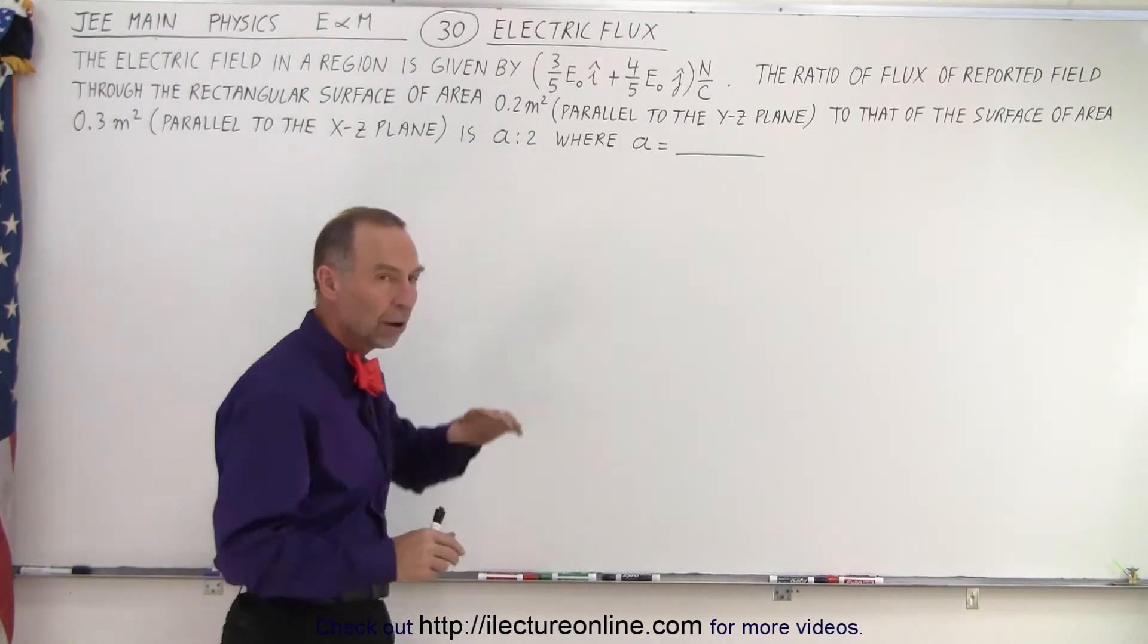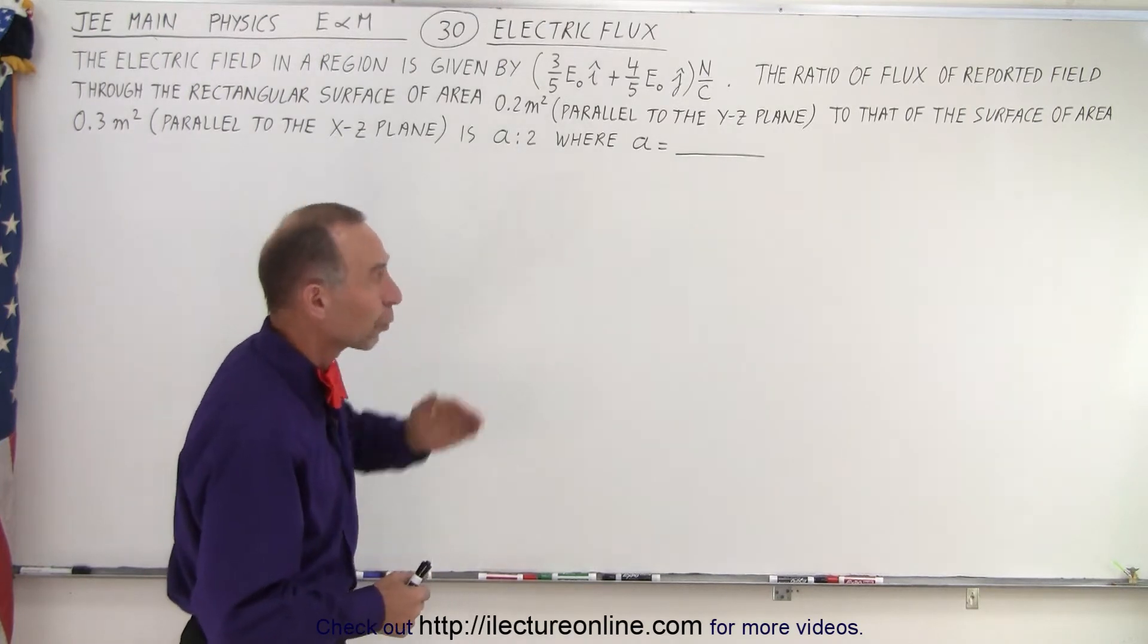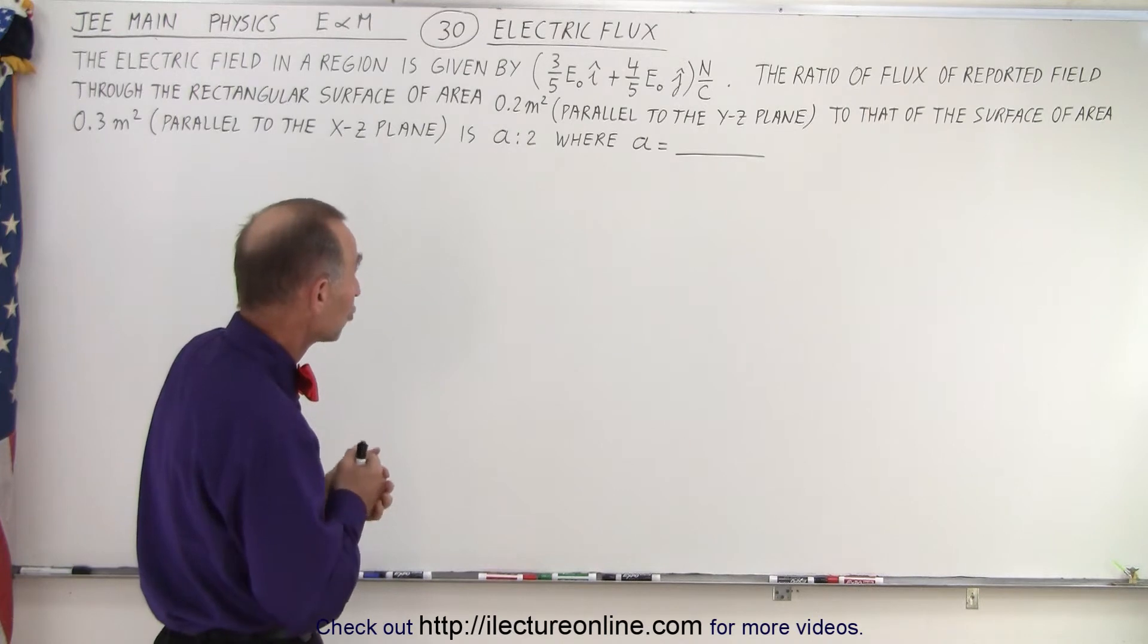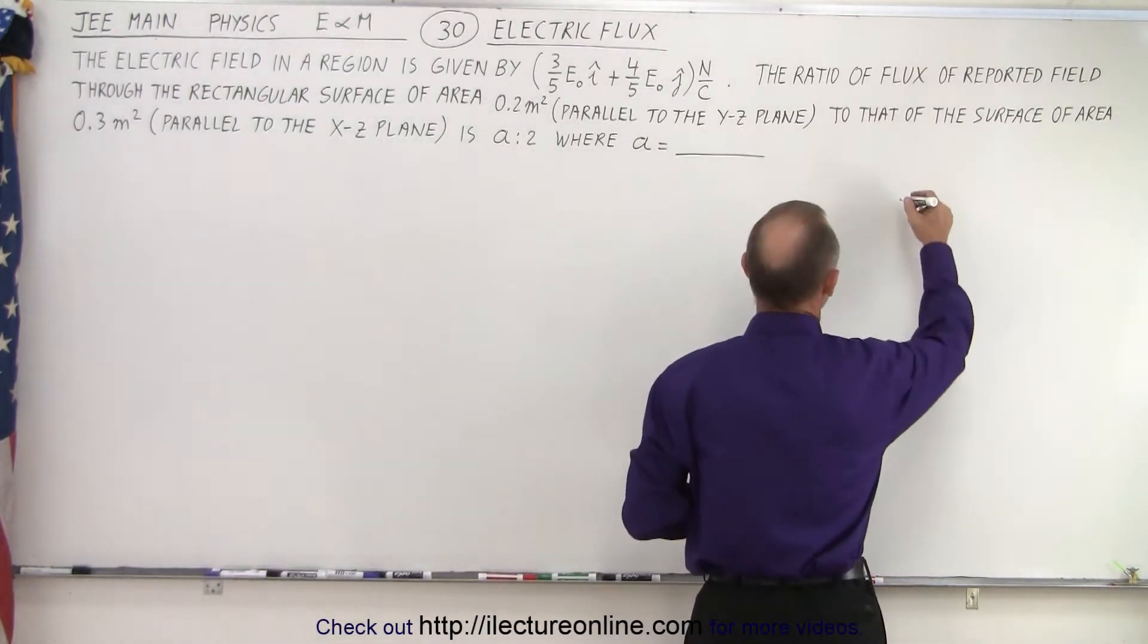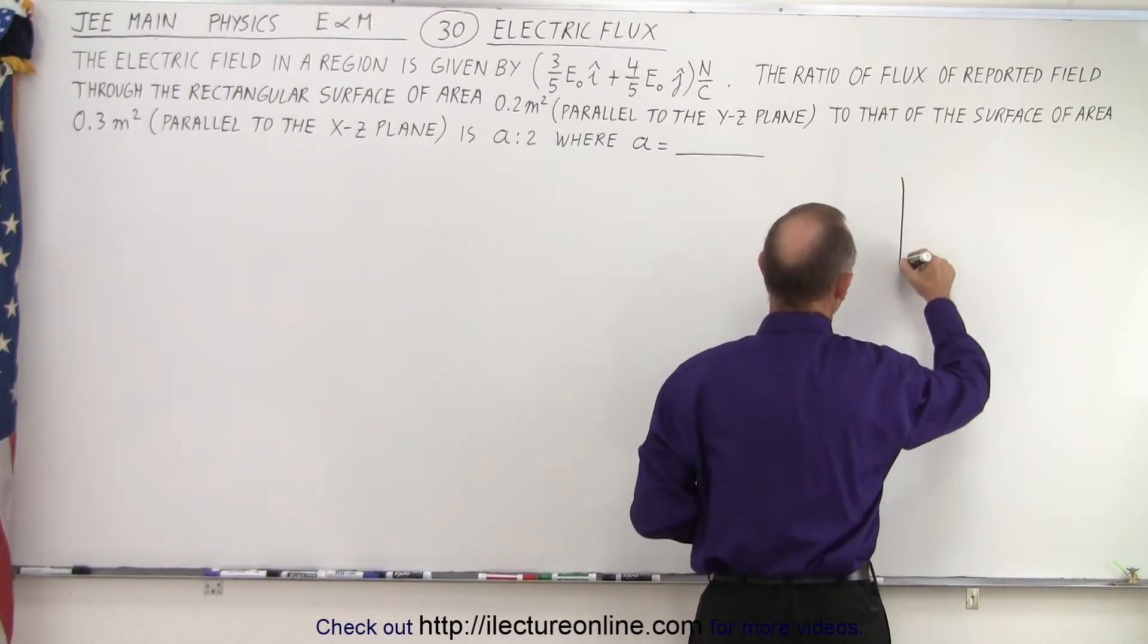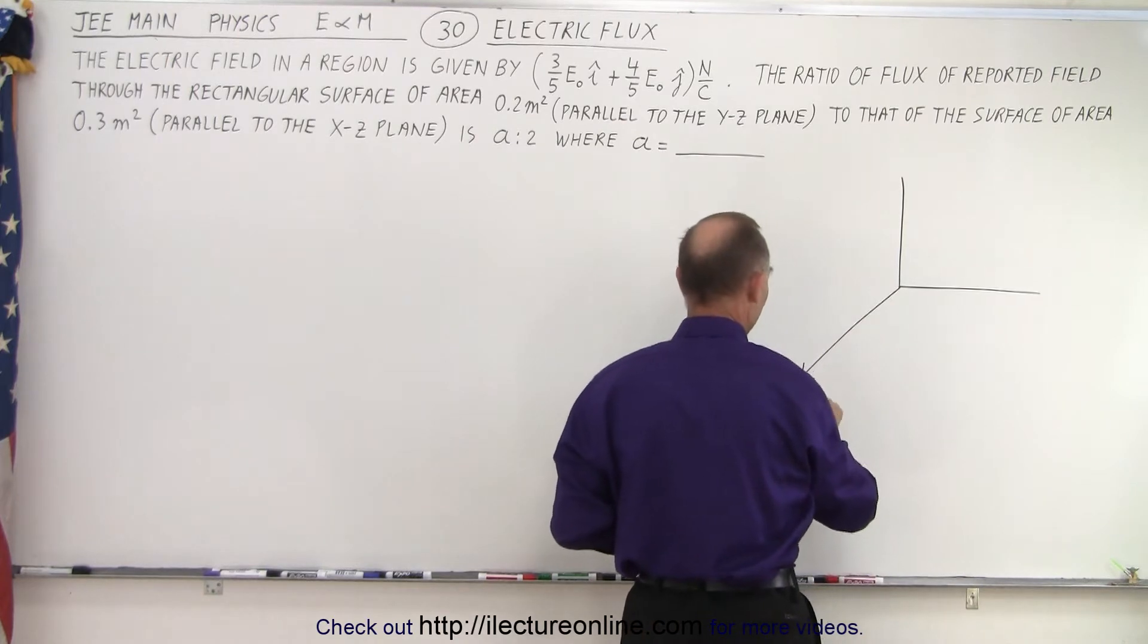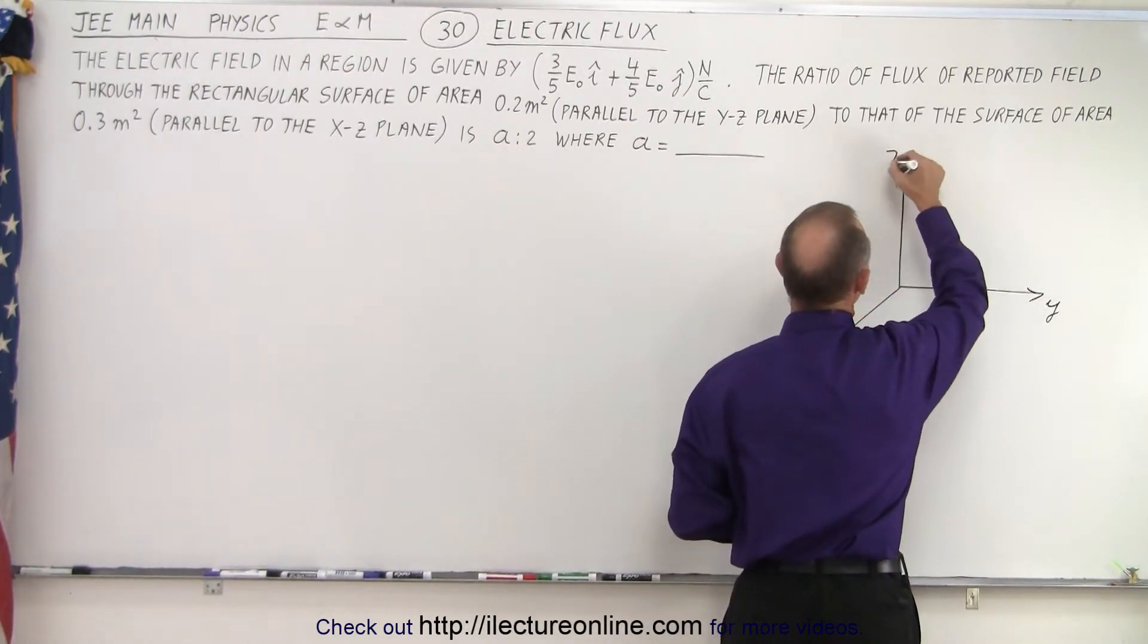So we're looking for this ratio of the amount of flux going through the first area and the amount of flux going through the second area. But visualizing what that looks like is the challenge. So let's try to draw what it might look like. We're going to draw the XYZ axis in three dimensions. So the best way to do that is like this. So this becomes the X axis, this becomes the Y axis, and this becomes the Z axis.